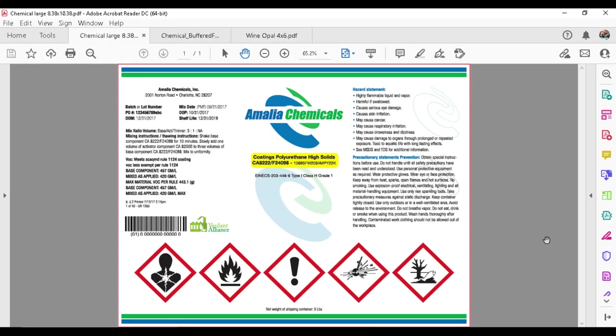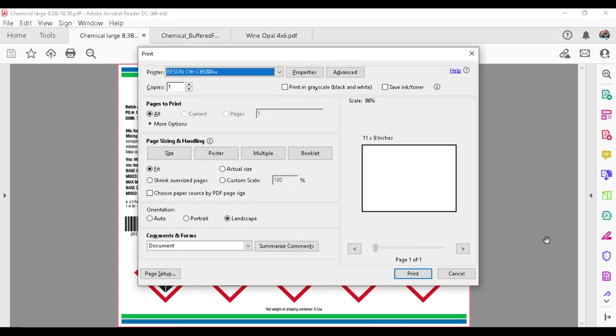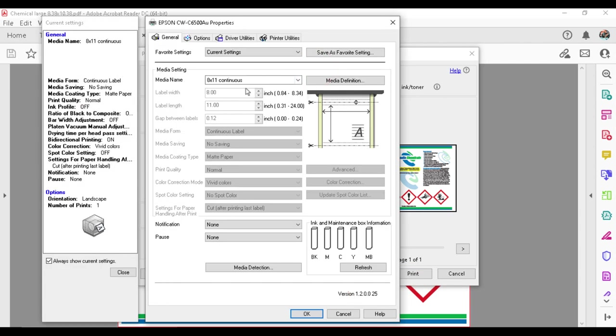All right. So this is a bigger label. We're going to do this one. The continuous material is eight inches wide. It's on a long roll. And I've created a preset called 8 by 11 continuous.